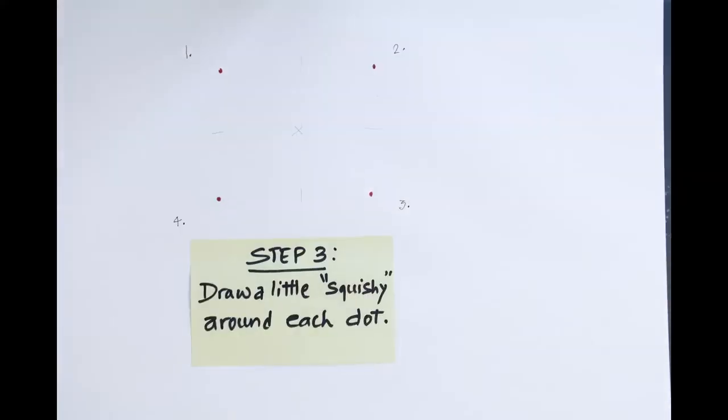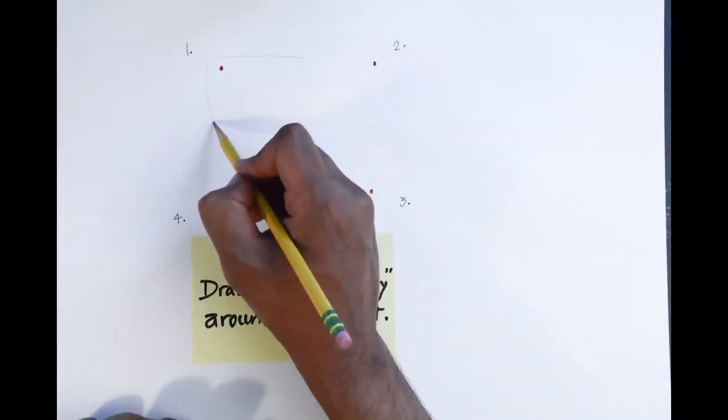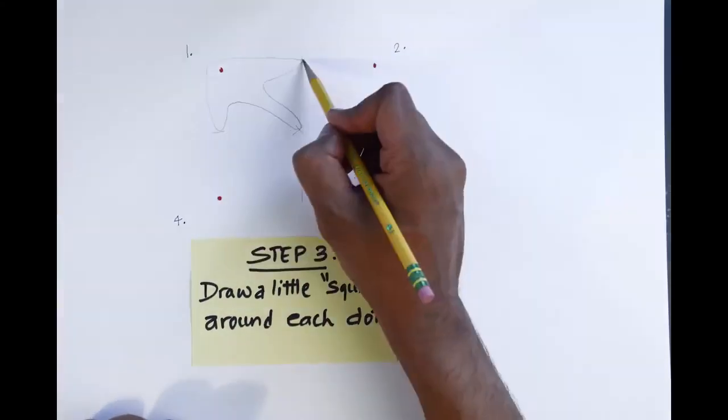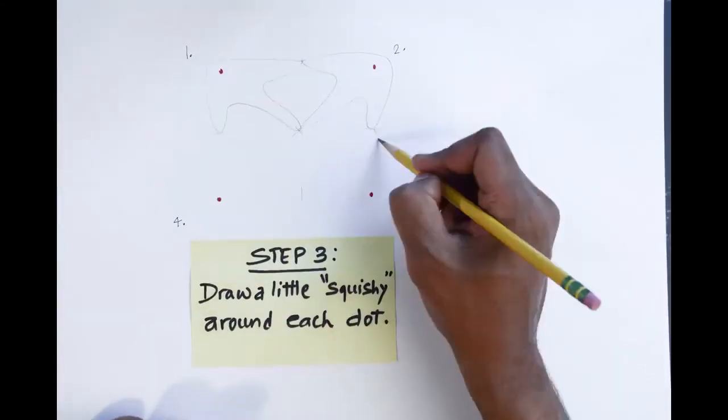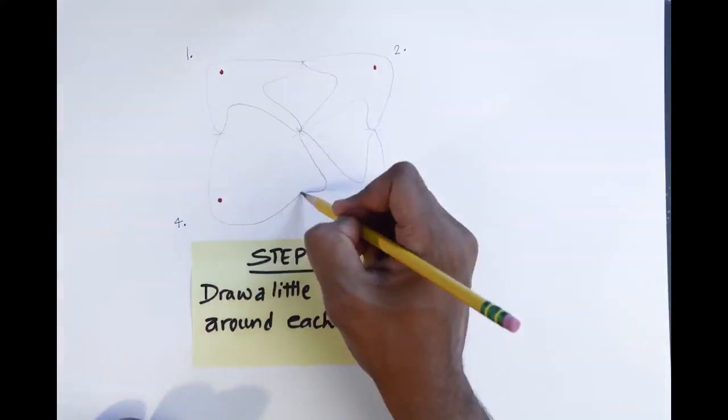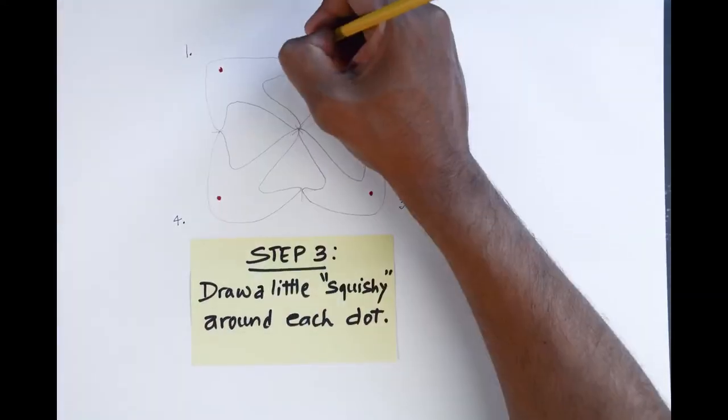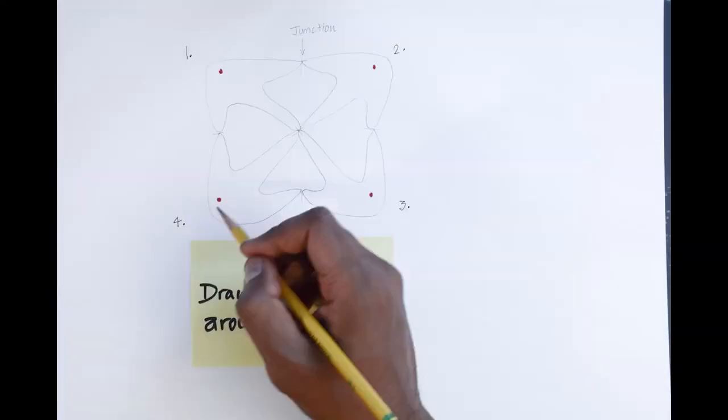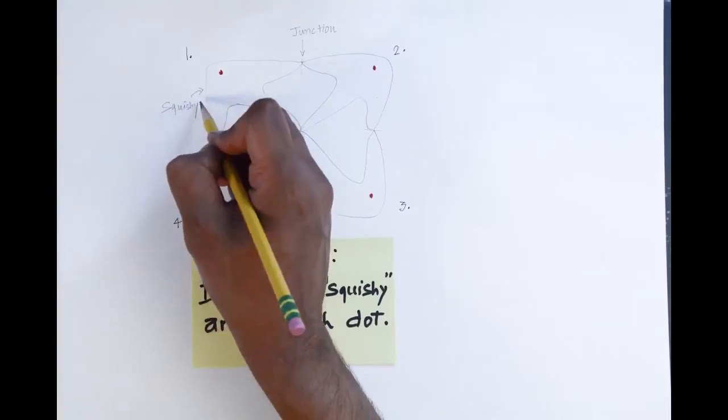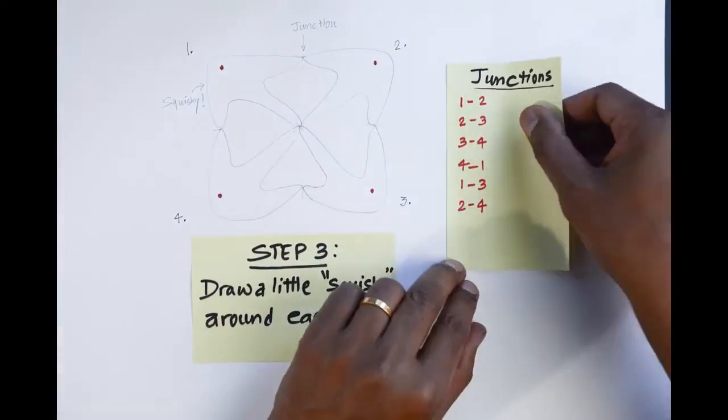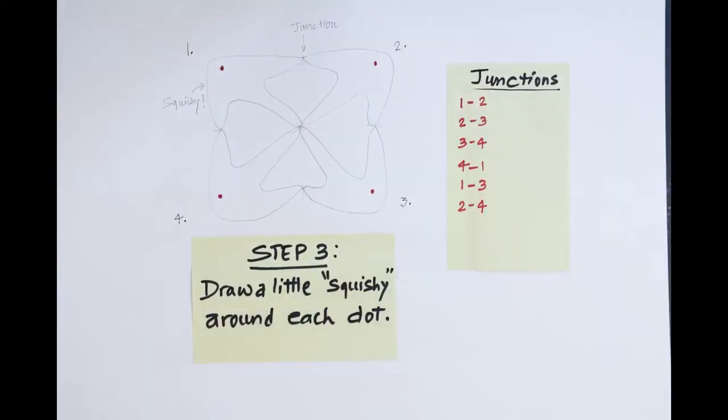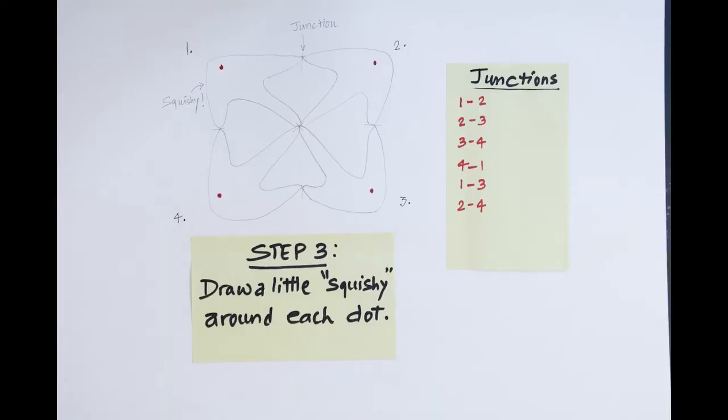Step three, draw a little squishy around each dot with arms extending out towards all the bisectors related to this dot. Arms of neighboring squishies will touch at a junction. There are six junctions in this example. This is now called a parent kolam. The cool thing about this parent kolam is that all possible four dot kolams will be created from this parent.